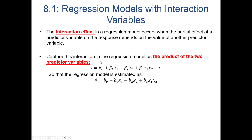Mathematically, we capture the interaction by including the product of the two predictor variables. We've added the term x1 times x2, and it has its own slope coefficient. The estimated regression equation includes b3 as the coefficient on the product of the two predictors.